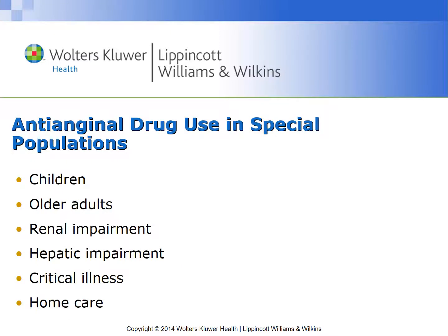Anti-anginal drugs used in special populations: for children, IV nitro can be used and calcium channel blockers are safe. For older adults, watch for falls with nitrates and use caution with all drugs due to decreased organ function over time. Beta blockers are actually found to help slow renal deterioration, especially with chronic renal failure. For the liver, calcium channel blockers must have careful monitoring, and metabolic modulators are contraindicated with hepatic disease. With all of these medications, we have to check pulse and blood pressure because of their effects on the body.